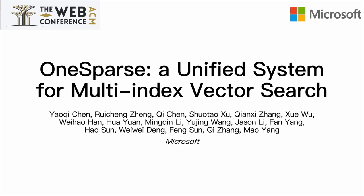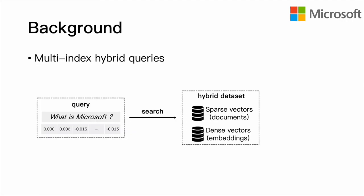I'm glad to introduce Microsoft's latest work, OneSparse, a unified system for multi-index vector search. This work focuses on multi-index hybrid queries, where they run joint search on multiple vector indices.